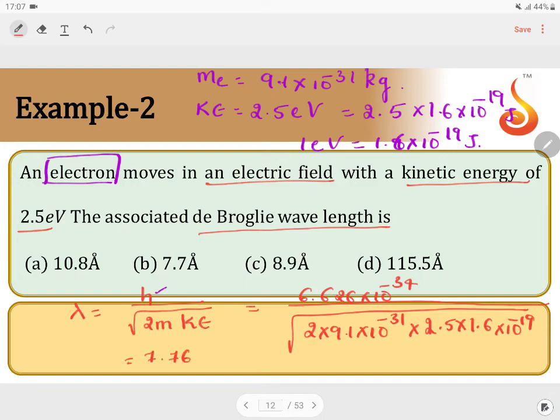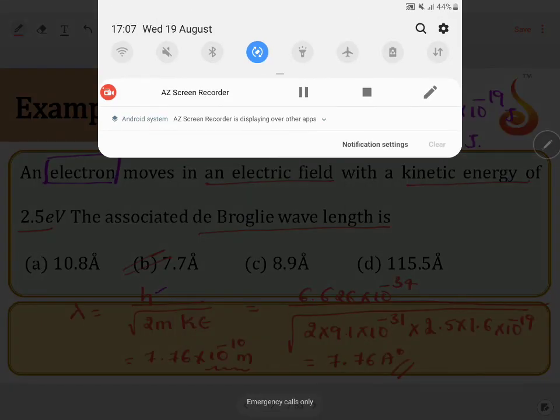7.76 into 10 to the power of minus 10 meters. We know that 10 power minus 10 meters is nothing but angstroms. Therefore, it is 7.76 angstroms. Therefore, it is option B.